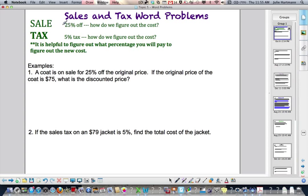So, one thing I have here, for example, if you have a sale of 25% off or a tax of 5% tax, how do we figure out the cost? If you read this, it is helpful to figure out what percentage you will pay to figure out the new cost.